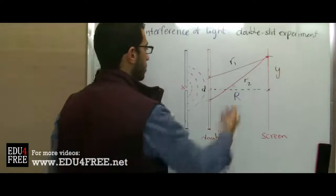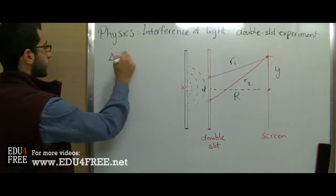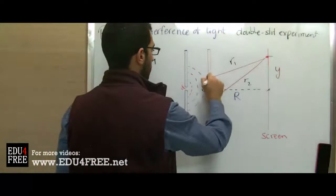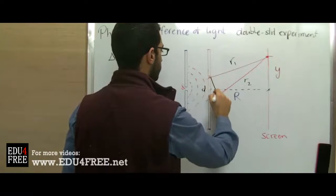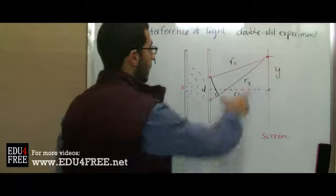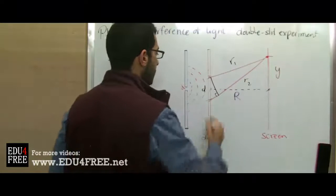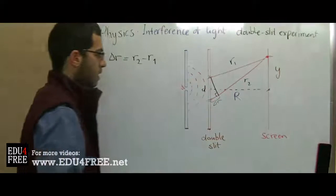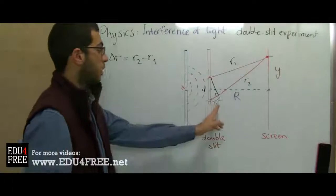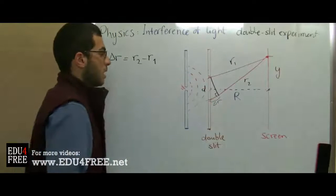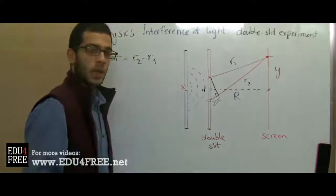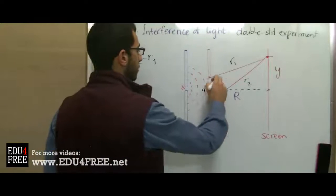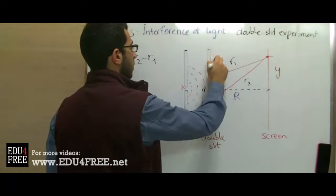We can note that r2 is a bit longer than r1 because it needs to travel an extra distance. This extra distance is of course the difference between r2 and r1. If we draw a perpendicular line from r1 to r2, we can notice that we have an isosceles triangle, and this is the extra distance delta r. We also have the inclination angle of light between the two rays, which is this angle theta.